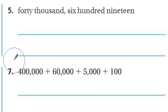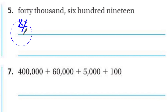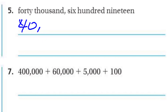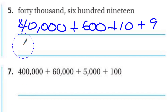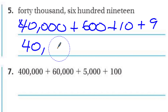Number five: we have 40,000, so I write 40,000 + 600 + 10 + 9 in expanded form, to make the 619. Standard form: 40,000 comma 619 — that's 40,619.